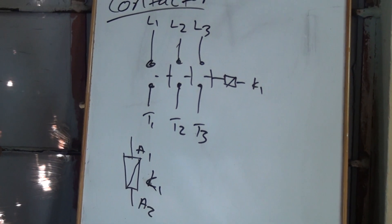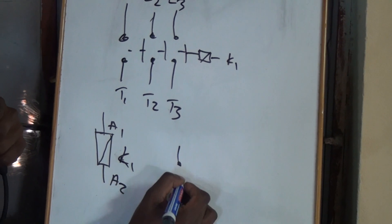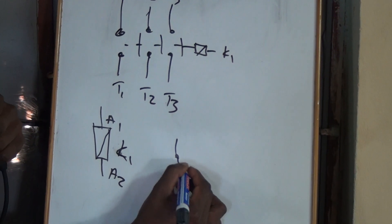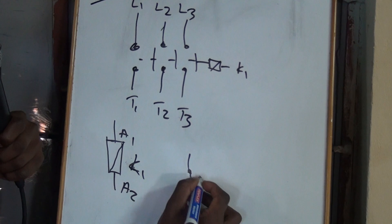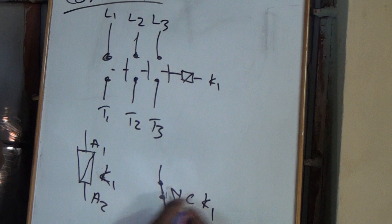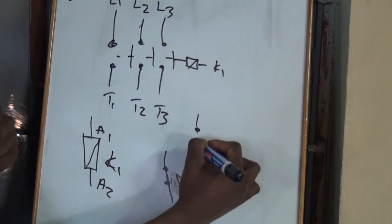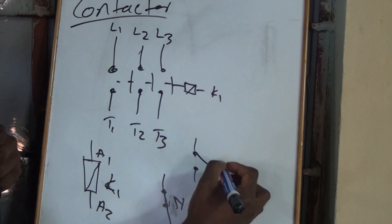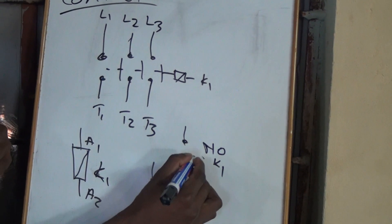Then the normally closed contact — you can draw it like this. And the normally open contact K1 — you can draw it like this, or also like this. It's still fine either way.